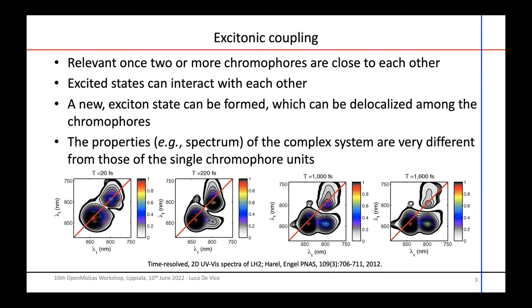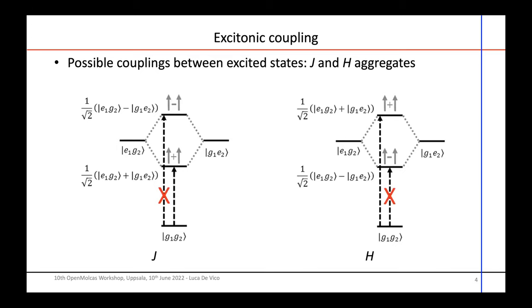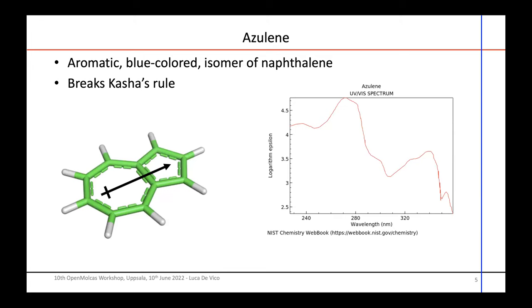As Andy said, it's relevant once two or more chromophores are close to each other and you have interactions within different electronic states. You may have seen this kind of two-dimensional spectra — it's a technique that's about ten years old but is still very much sought after. You have different chromophores interacting with each other and you have to describe how they do this interaction.